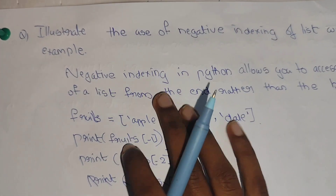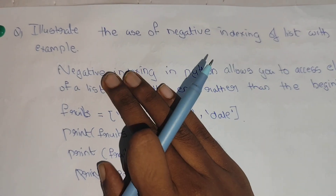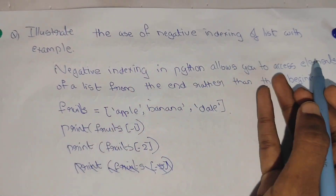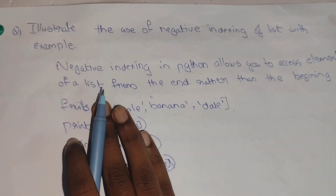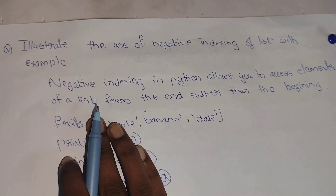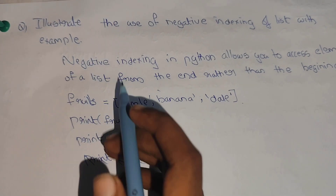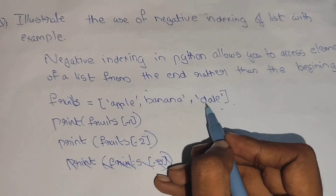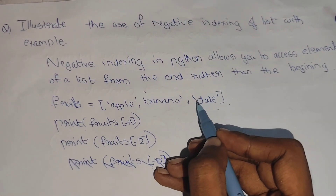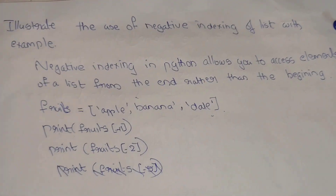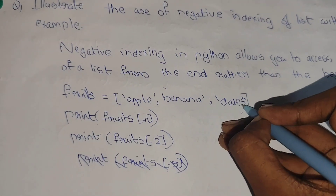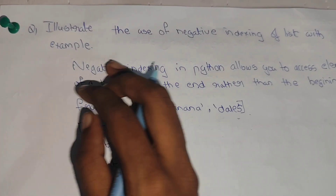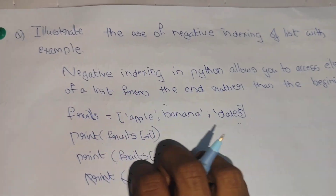Next, you can use negative indexing of the list with an example. Python allows you to access the elements of a list from the end rather than the beginning. For example: fruits = ['apple', 'date']; print(fruits[-1]). Negative index -1 is the last element — which is 'date'. Minus 2 is the second last element. You can access elements from either the beginning or the end using negative indexing.